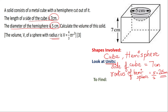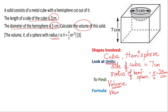Now the next thing is what is to be found. We have to find the volume of the solid, so we have to be sure we are dealing with the volume. The next thing is the formula. We have the shapes and we are going to find the volume, so we need to know that the volume of the cube is the side cubed.